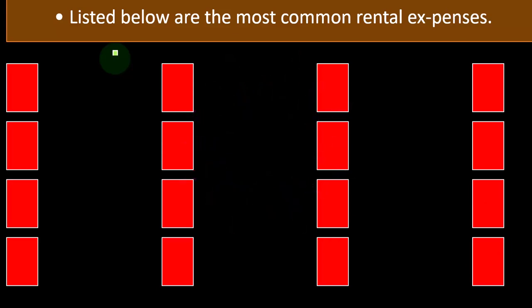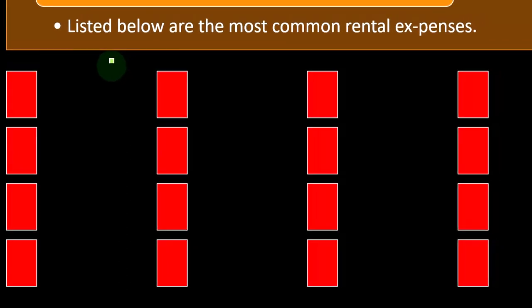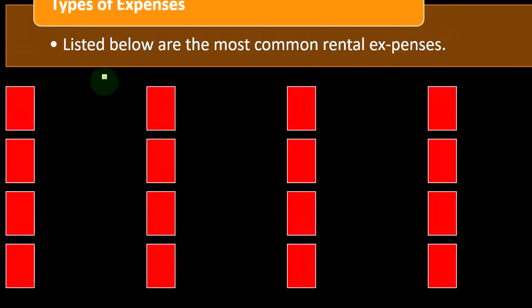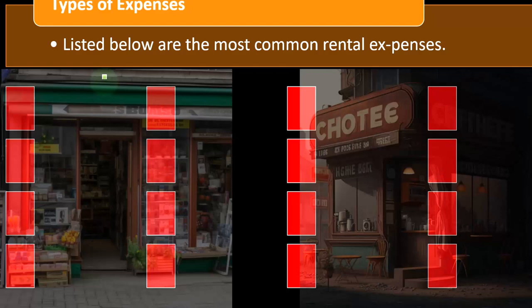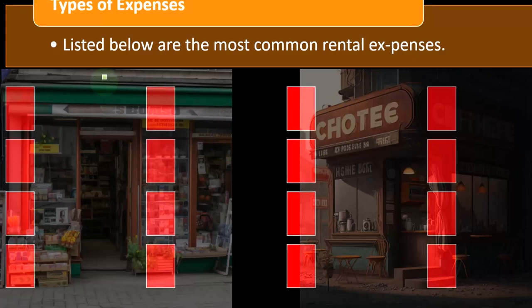We want to think about that clean-cut situation where the property is just rental property. Once we have those concepts down, we can apply them to the more convoluted situations where we have a mix of personal and business use, and then consider the differences where we have to parse out business versus personal.